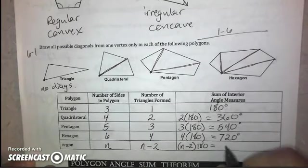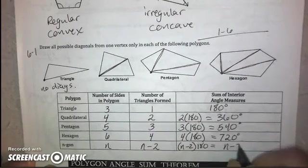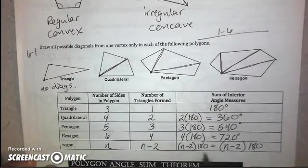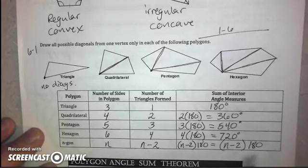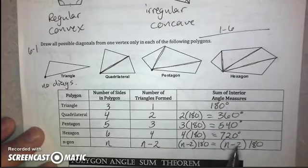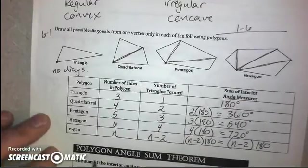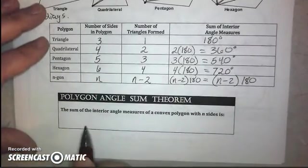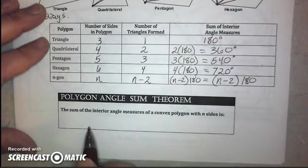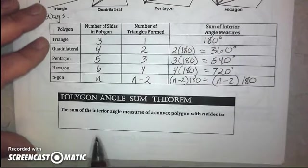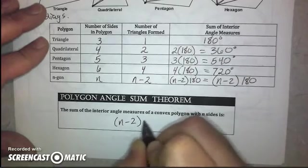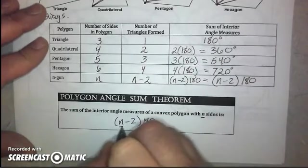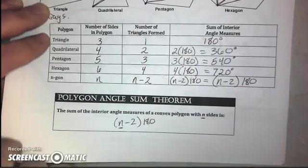Well, that means we take n minus two and multiply it by 180. And instead of distributing, we don't need to do that. We can just write it as n minus two, parentheses, and then times 180. So, that's how we're going to calculate the interior angle sum of any triangle. And so, we have a theorem for that. It's called the polygon angle sum theorem. And that states the sum of the interior angle measures of a convex polygon with n sides is n minus two times 180. Where n is the number of sides. And we're going to use that in our next set of examples.